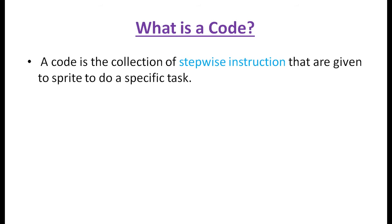So first of all, we will learn what is a code. A code is a collection of stepwise instructions that are given to a sprite to do a specific task.